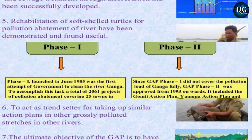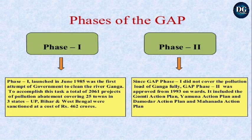The Ganga Action Plan is divided into two phases. The first phase was launched in June 1985 — it was the first attempt by the Government of India to clean the river Ganga. A total of 261 projects of pollution abatement covering 25 towns in three states — Uttar Pradesh, Bihar, and West Bengal — were sanctioned at a cost of 462 crores.